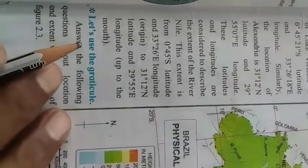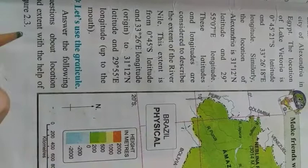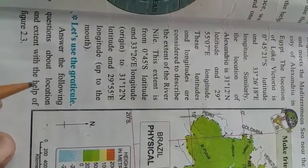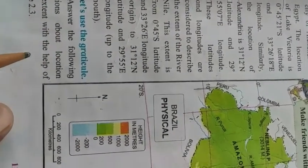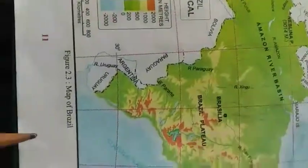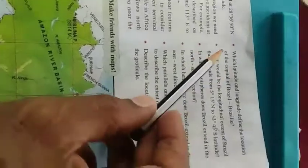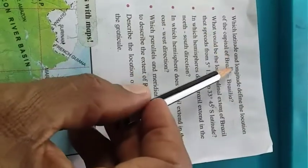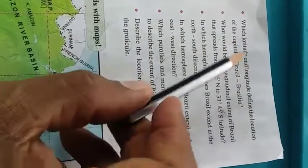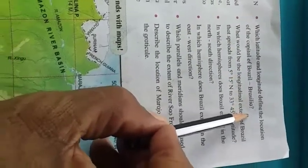Now let us use the Graticule to answer the following questions about location and extent with the help of figure number 2.3. Look at this figure 2.3 — it is a map of Brazil. Which latitude and longitude define the location of the capital of Brazil, Brasilia?